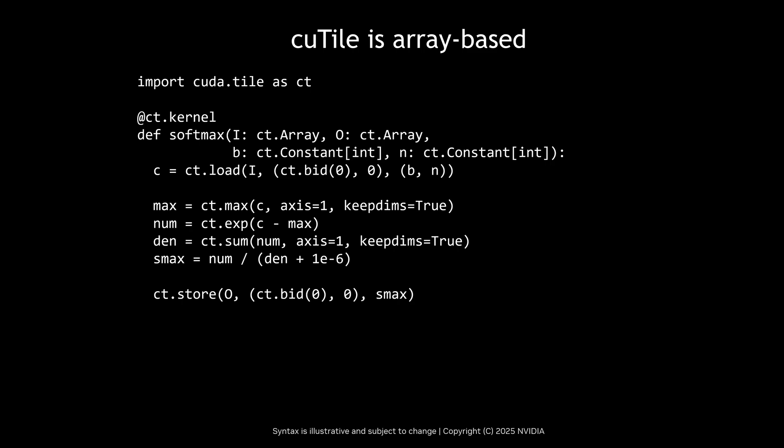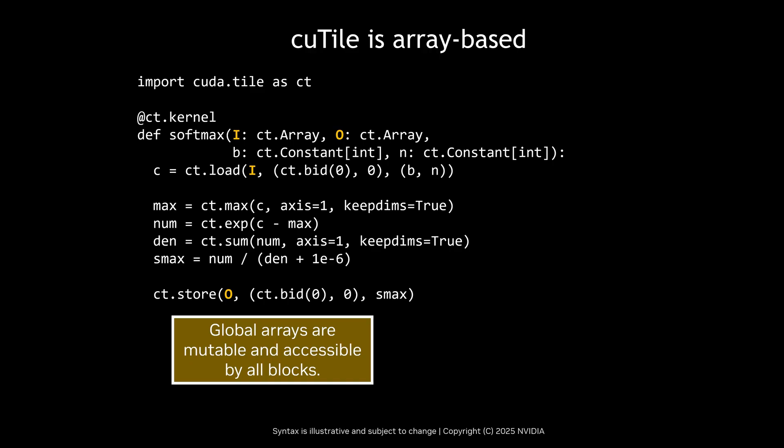Qtile is array-based, and there are two kinds of arrays in Qtile. Global arrays are typical NumPy-like mutable arrays that are accessible by all tile blocks. If you modify their contents, any other references to the underlying data will see the changes. They are passed in as kernel parameters or globals. You can only perform a limited set of operations on global arrays in tile code, most importantly loading from them to create tile arrays or storing tile arrays to them.